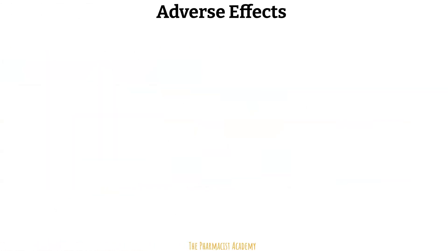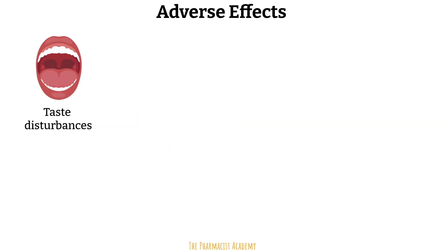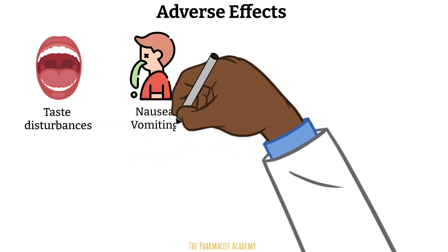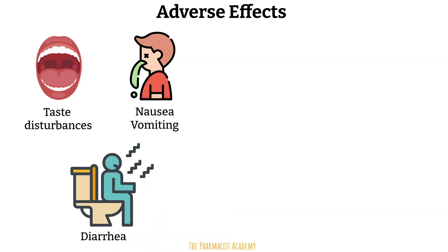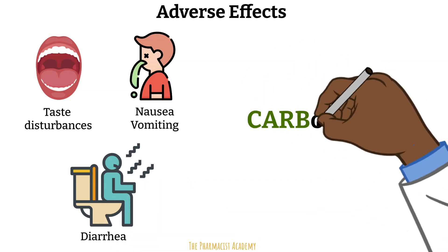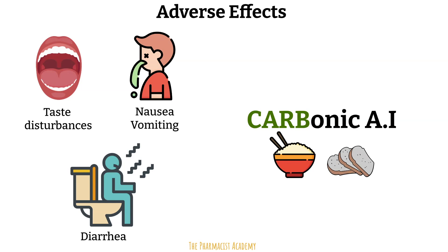The adverse effects include taste disturbances — patients may complain of a bitter aftertaste — as well as nausea, vomiting, and diarrhea. A good way to remember these side effects is to think of the 'carb' in carbonic anhydrase inhibitors, which makes you think of carbs like rice and bread — food you eat — so think of side effects related to the GI system: bitter aftertaste, nausea, vomiting, and diarrhea.